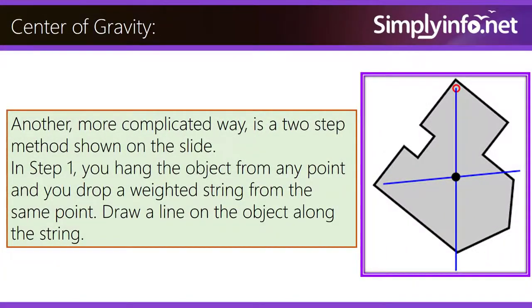Another more complicated way is a two-step method shown on the slide. In step one, you hang the object from any point and you drop a weighted string from the same point. Draw a line on the object along the string.